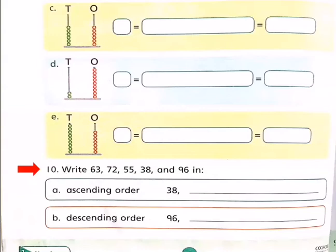The question is write 63, 72, 55, 38 and 96 in part A ascending order. In part A you have to write these numbers in ascending order.